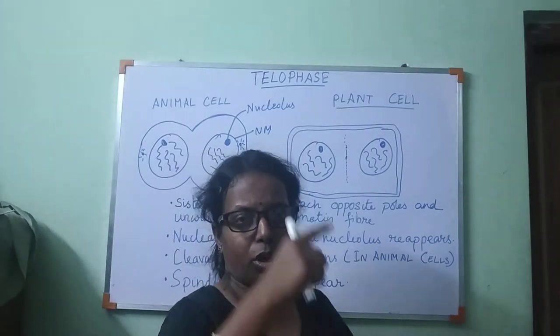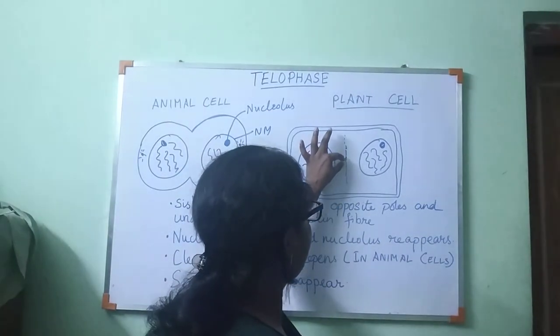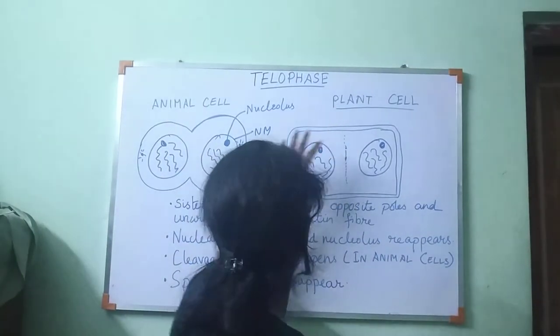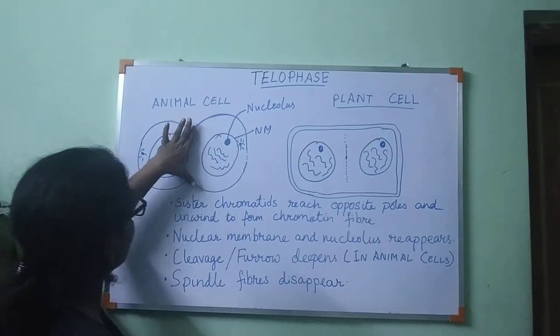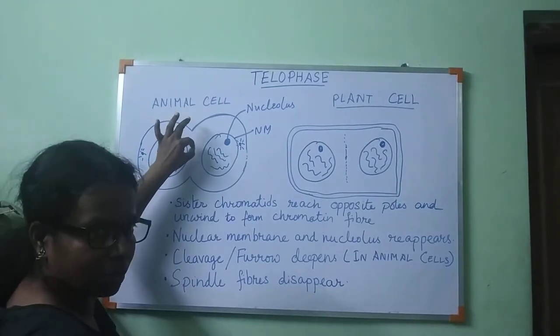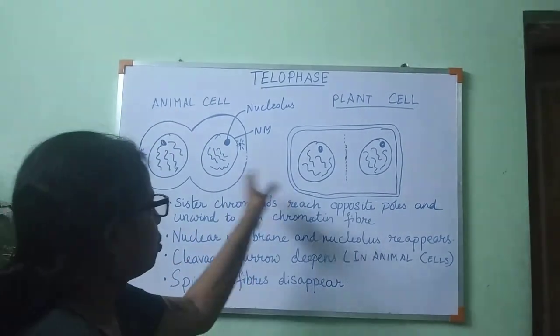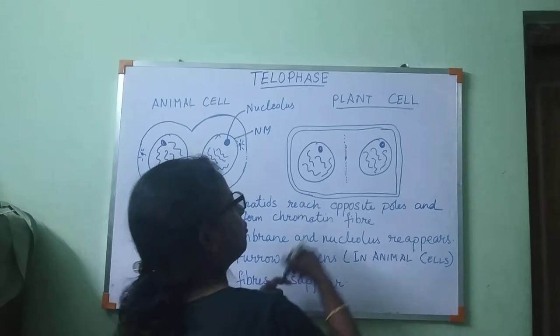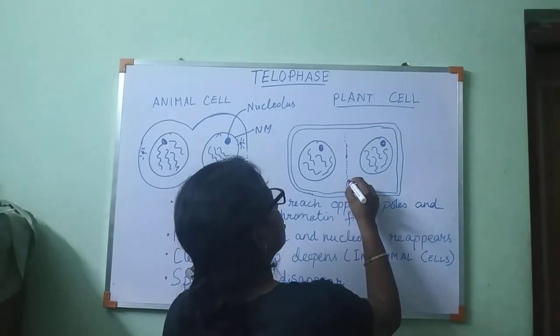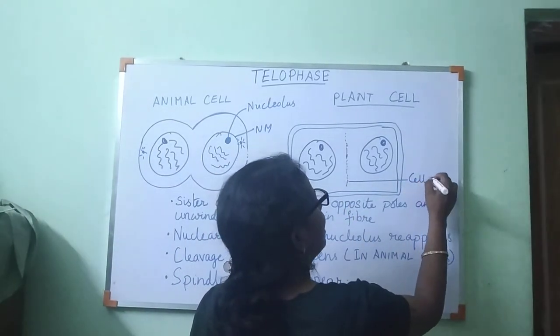The cell plate extends towards the border of the cell — it starts from the center and spreads outward. This structure is called the cell plate.